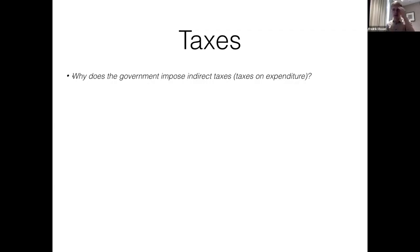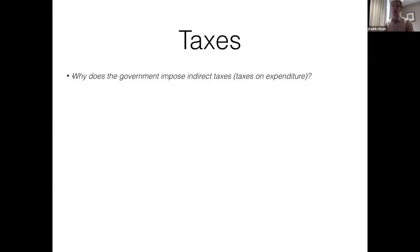Why does the government impose indirect taxes? Why does it have taxes on expenditure? Can you think of any reasons why the government might want to tax a specific good? Well, obviously the government can make money off of this — the government can make tax revenue and they'll be able to use this to do all kinds of things that the government provides in an economy. But on top of that, the government can actually use indirect taxes to reduce the consumption or reduce the production of certain goods.